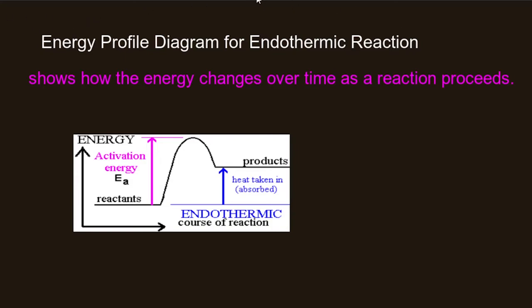Now the key thing to discuss about the energy profile diagram is about the reactants — how a reactant starts the reaction. All reactants need the minimum amount of energy required to start the reaction, which is called the activation energy. The abbreviation for activation energy is Eₐ. This is the minimum energy required to start the reaction.